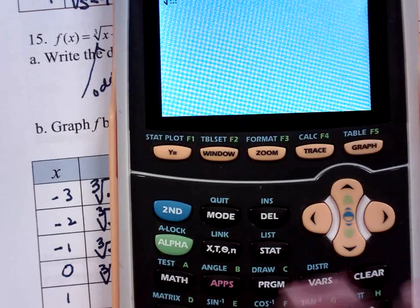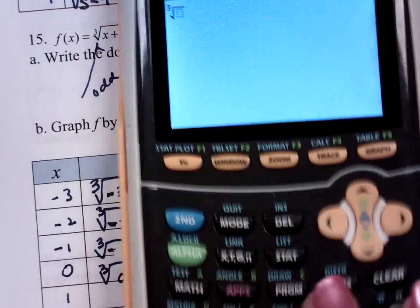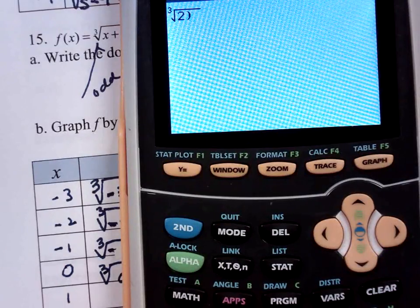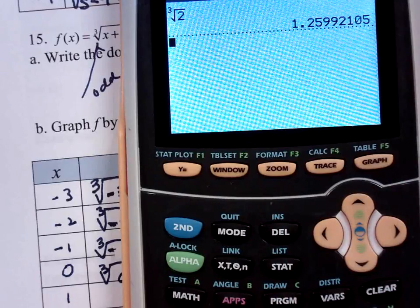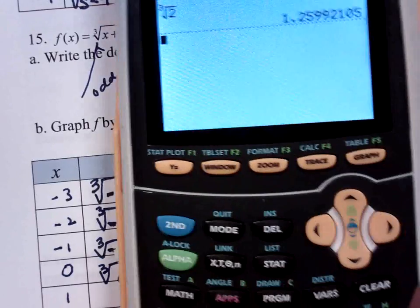So I'll press 4, and I want the cube root of 2. Okay. So I'll press 4, and I want the cube root of 2. And that's 1.3.